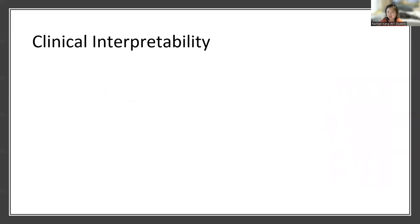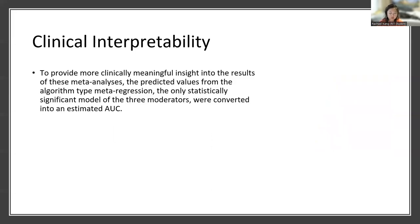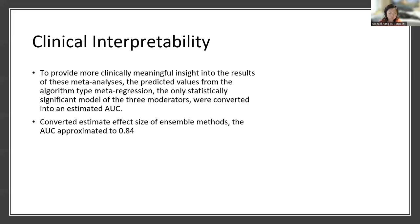Now, what does all of this mean clinically? To provide more clinically meaningful insights, the predicted values from the meta-regression using algorithm type as a moderator were converted into an estimated AUC. When we converted the effect size of ensemble methods — which was the most reported and seemingly most accurate algorithm for prediction — we got an AUC of approximately 0.8, which shows good classification accuracy.